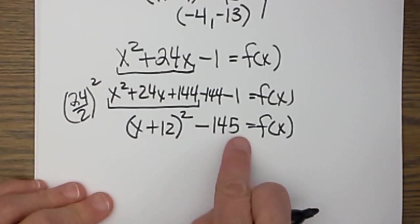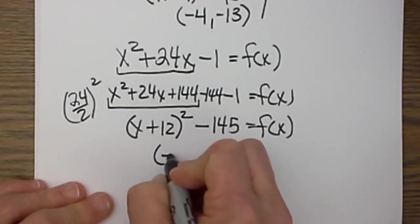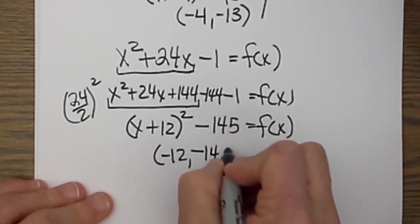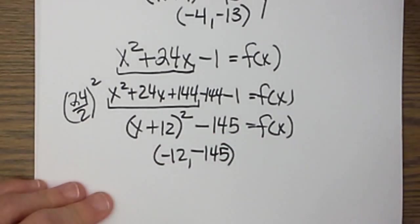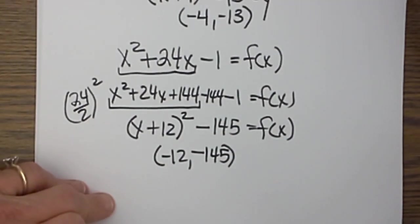Now we can figure out what h and k are. So h is the opposite sign of what we see, which is negative 12, and k is the same sign as what we see. And there is our vertex. From there you can graph your quadratic equation. Hope this video was helpful.